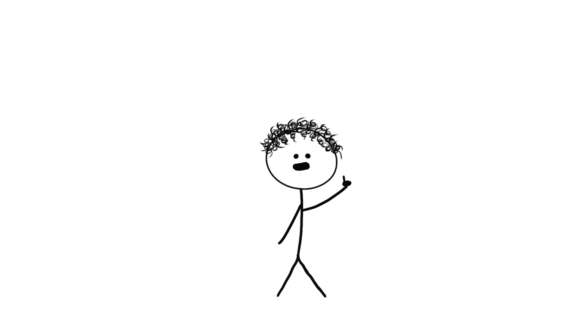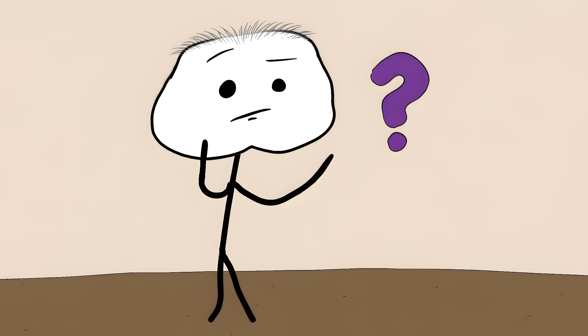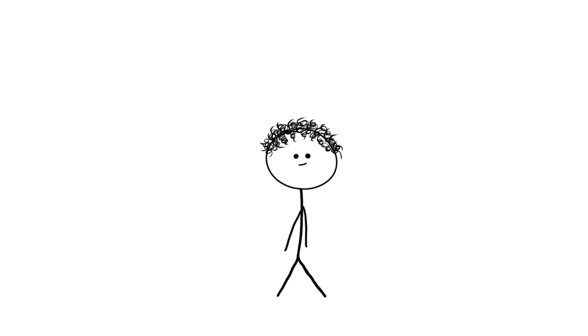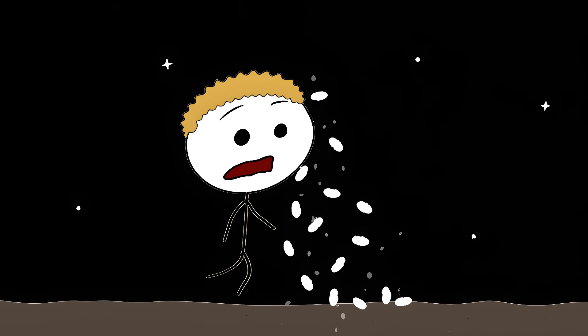Here's something that'll mess with your head. Gravity actually slows down time. Your feet are aging slightly slower than your head right now, because they're closer to Earth's gravity. Gravity is actually an insanely weak force. A tiny fridge magnet can beat the gravitational pull of the entire Earth. Yet without this wimpy force, the universe would just be random atoms floating nowhere.